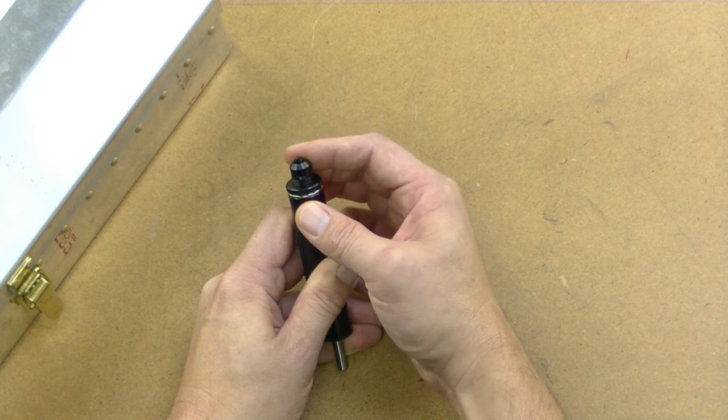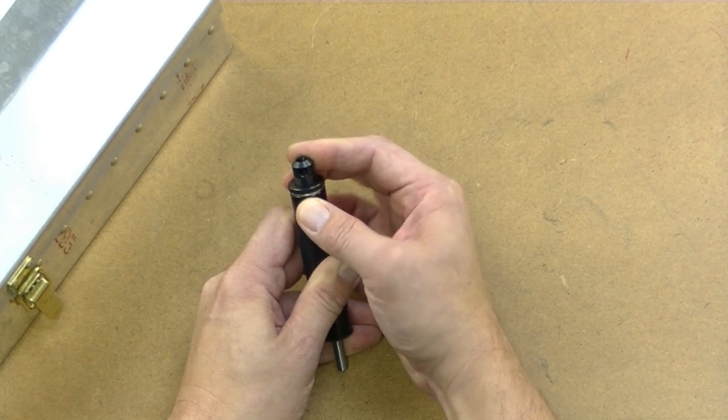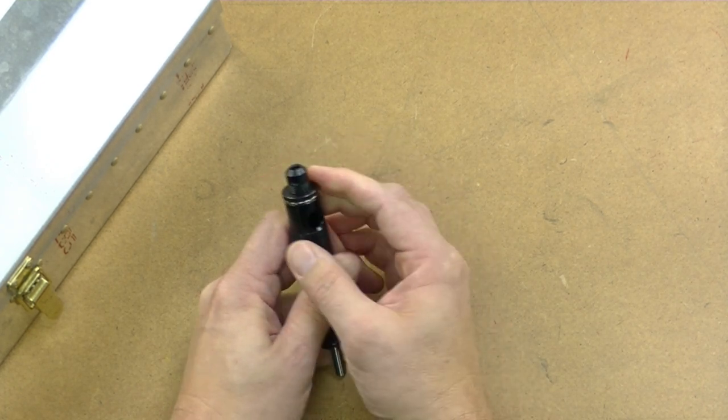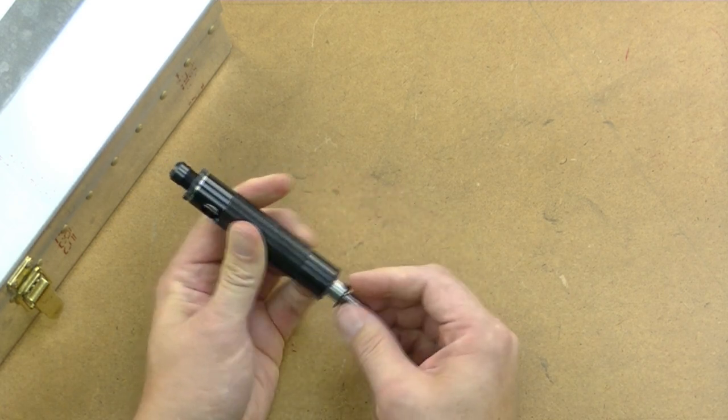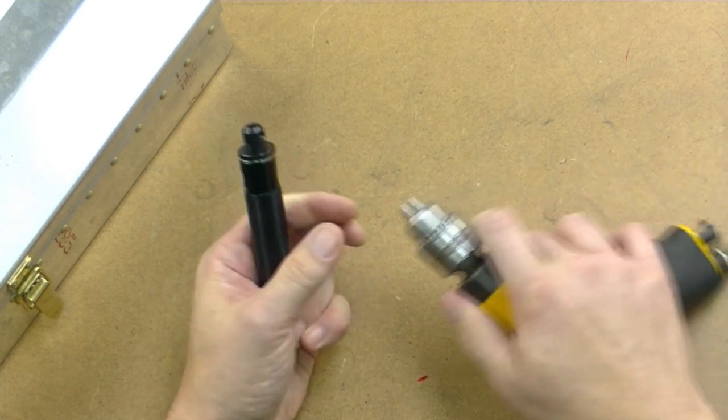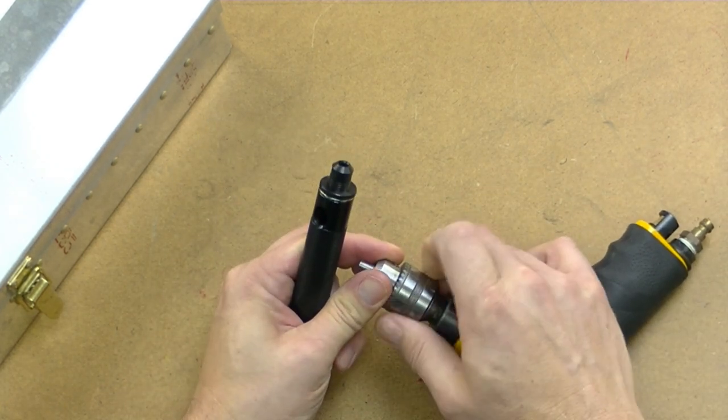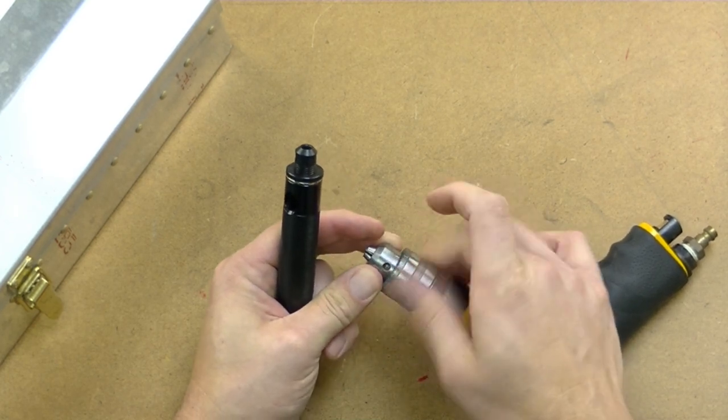And then holding it still I'm going to roll that locking ring down, lock it tight so it can't move. Now I'm just going to put this in a drill. I'm going to use an air drill but you could use an electric drill for this as well.